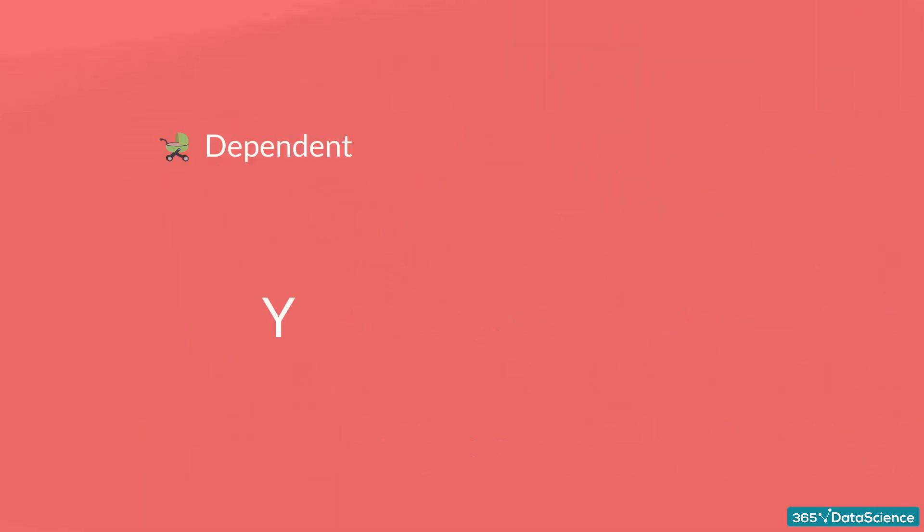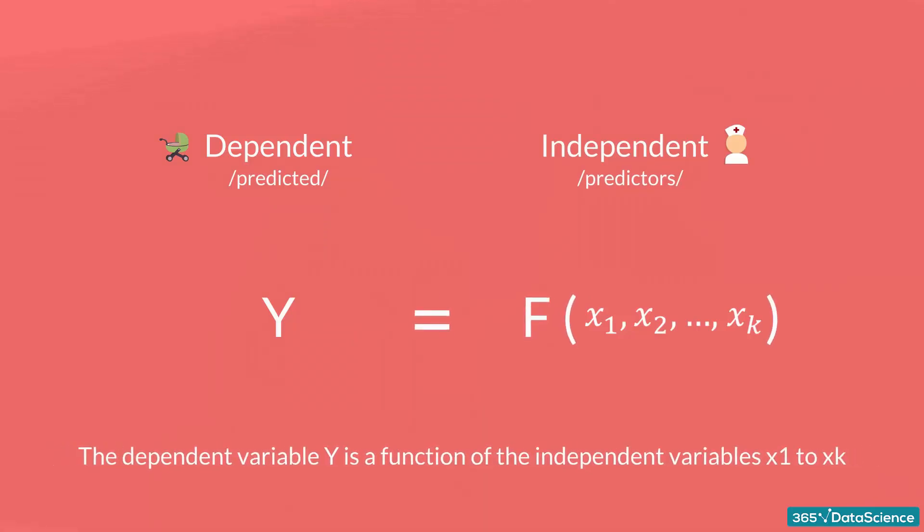There is a dependent variable labeled Y being predicted, and an independent variable labeled x1, x2, and so forth. These are the predictors. Y is a function of the x variables, and the regression model is a linear approximation of this function.